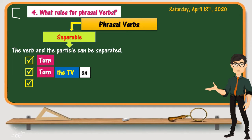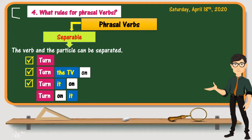If the object is a pronoun, it should be put between the verb and the particle — for example: turn it on. We never say turn on it — this is not correct.